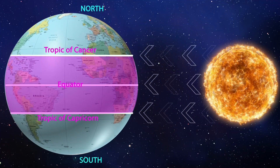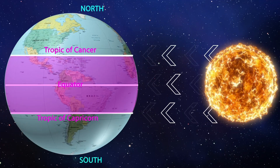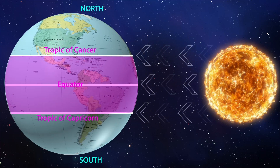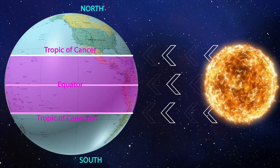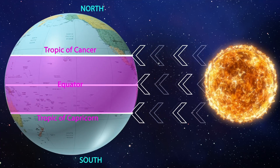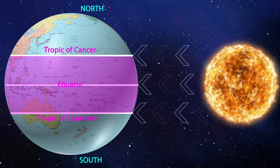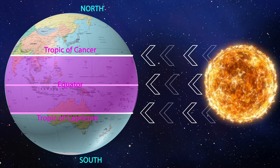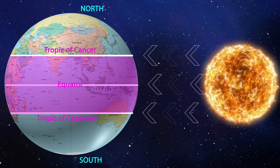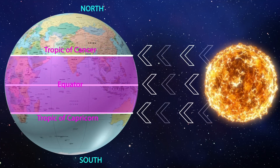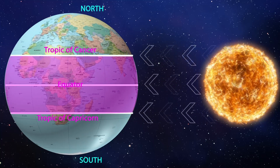Between the two tropic zones, which includes the equator, the sun is directly overhead twice per year. Outside the tropic zones, whether to the south or north, the sun is never directly overhead. As you go closer to the poles, you have more and more days where the sun remains above or below the horizon for six months at a time.